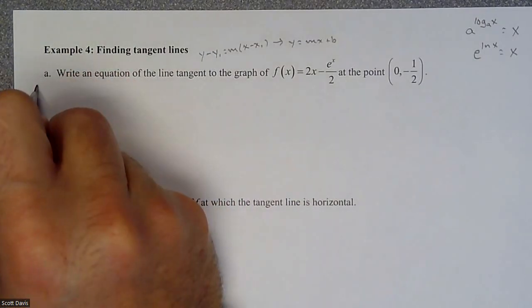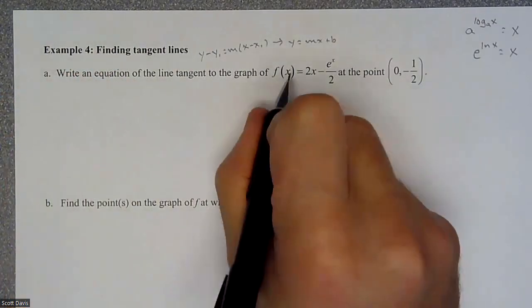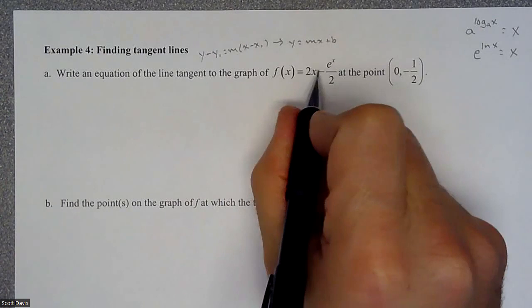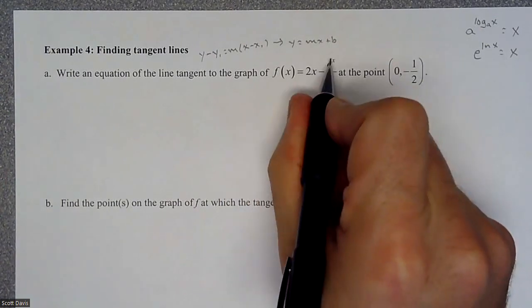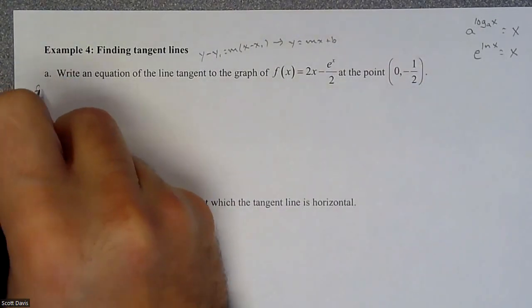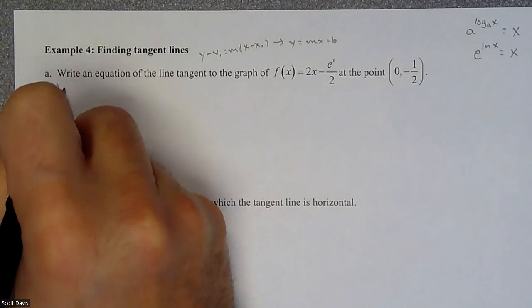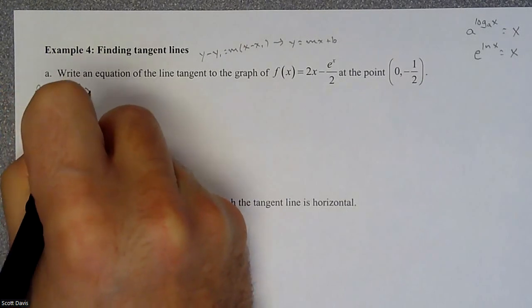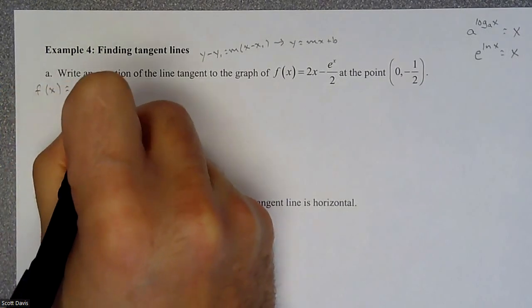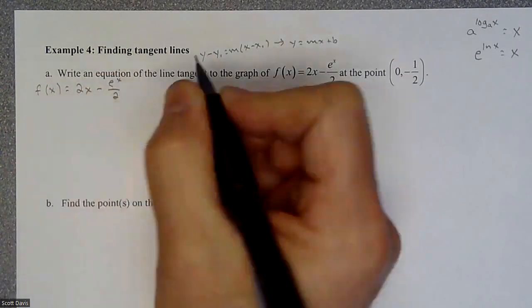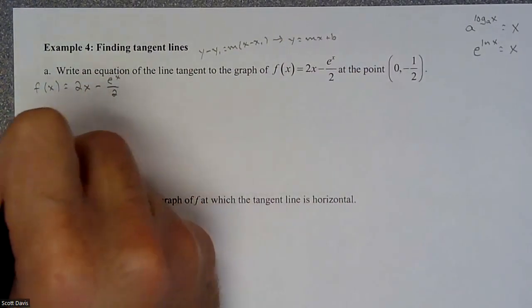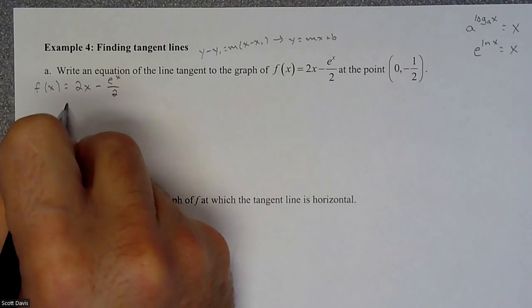So here's where the calc is going to kick in. So in order to find our slope, we are going to do a slope equation, and then plug in 0, which means we have to do the derivative of this. So our problem is, here is our 2x minus e to the x over 2.